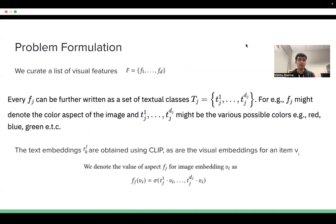We formulate our problem by first curating a list of visual features that depends on the domain. For simplicity, assume these features to be color and sleeve. For each visual feature, we have a list of visual sub-features — for color, these could be red, blue, green, or various other colors. A feature becomes part of our explanation only if the majority sub-feature changes between the original image and the counterfactual image. For example, if for the original image the majority sub-feature was red, and for the counterfactual image it is now green, this becomes part of our explanation.